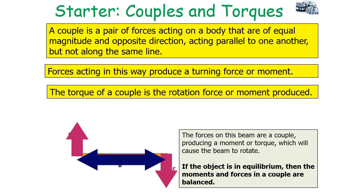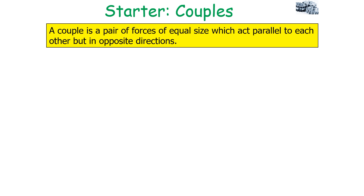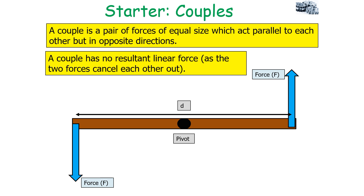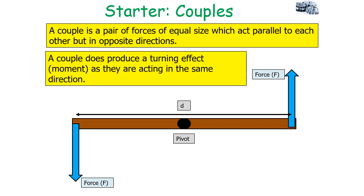If the object is in equilibrium then the moments and forces in a couple are balanced. A couple is a pair of forces of equal size which act parallel to each other but in opposite directions. A couple has no resultant linear force because the two forces cancel each other out, but a couple does have a turning effect — a moment — as they act in the same rotational direction. In this case you can see the moment produced will cause the object to rotate anti-clockwise.